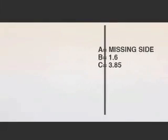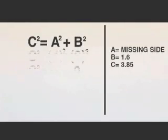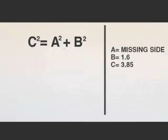So we write down the Pythagorean theorem formula. We switch it to isolate A and we replace A, B and C.